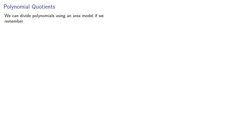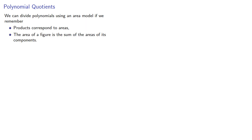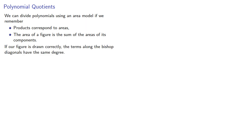We can divide polynomials using an area model if we remember that products correspond to areas and the area of a figure is the sum of the areas of its components. Moreover, if our figure is drawn correctly, the terms along the bishop diagonals have the same degree, and this will be incredibly useful for us.